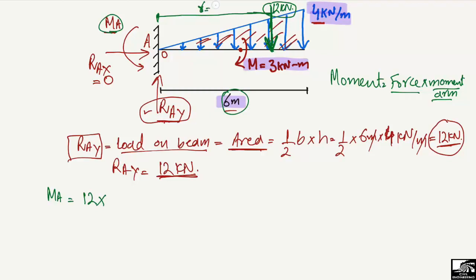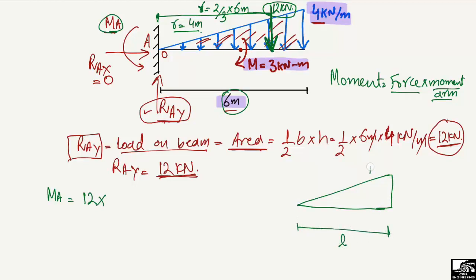The centroid R is equal to two-thirds of the length, or two-thirds of 6 meters, so R equals 4 meters. To illustrate: for any triangle with total length L, the centroid from the narrow tip is equal to two-thirds of L. That is the standard formula, which is why R = 2/3 × 6 = 4 meters.